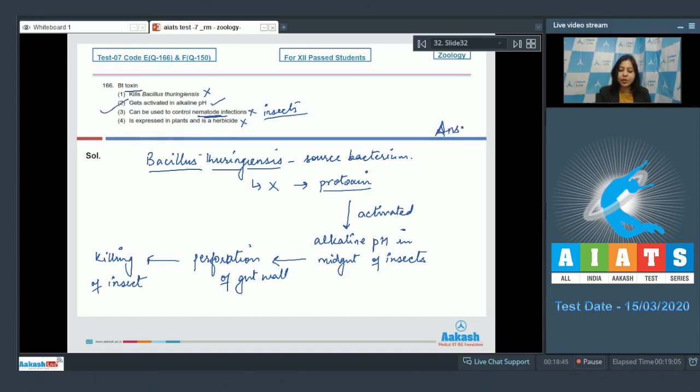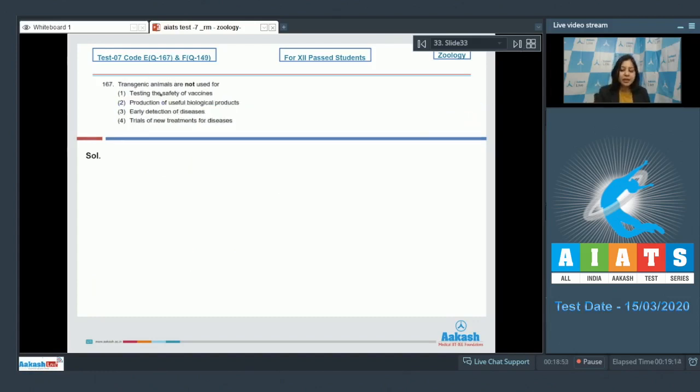Moving on to the next question, question number 167: Transgenic animals are not used for - number one, testing and safety of vaccine. This is incorrect as transgenic animals are used for this.